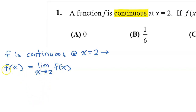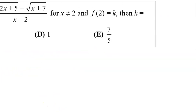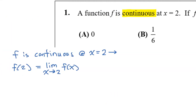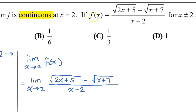We know what f at 2 is — f at 2 is equal to k, which is what we're looking for. So let's replace f at 2 with k, and then we can see that in order to find k, we really just need to find the limit of f of x as x approaches 2. Since f of x equals this expression everywhere except x equals 2, we need to find the limit of this expression as x approaches 2.